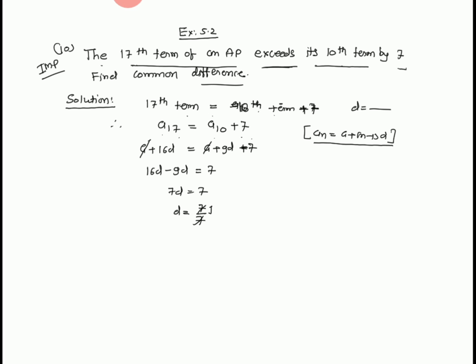Therefore d equals 1. We obtain the value of d equal to 1. Therefore common difference of an arithmetic progression is d equal to 1. This is the answer.